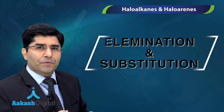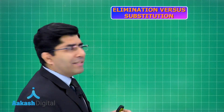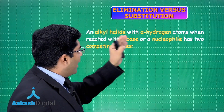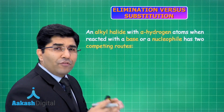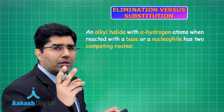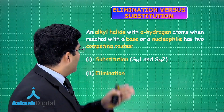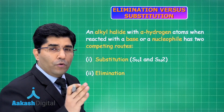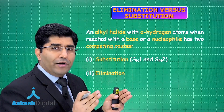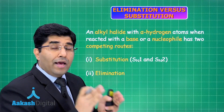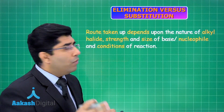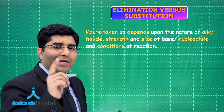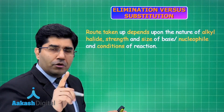Let's discuss elimination versus substitution together. An alkyl halide with alpha hydrogen atoms, when it reacts with a base, can undergo two types of pathways: the first is substitution reaction, and the second is elimination reaction. Both depend on the strength of the base and the type of alkyl halide — whether it is primary, secondary, or tertiary.